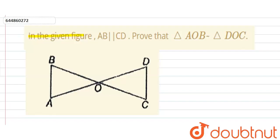The question is in the given figure AB parallel to CD, prove that triangle AOB is similar to triangle DOC.